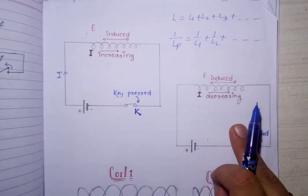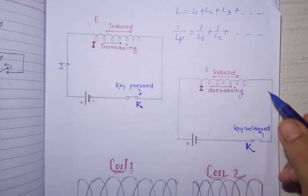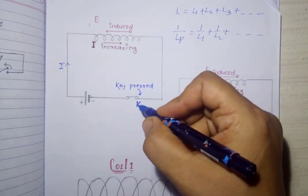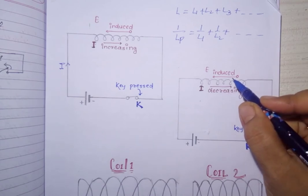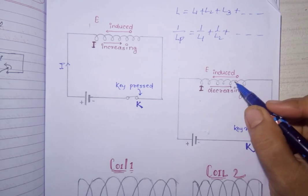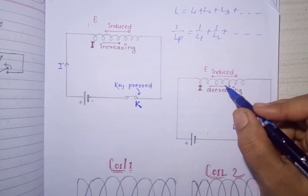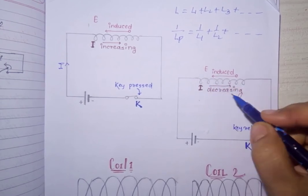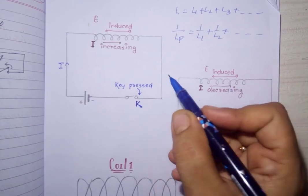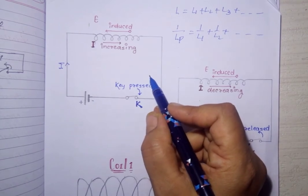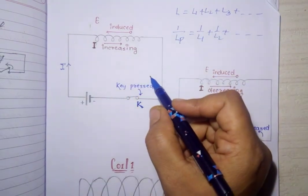In another diagram, when we release the key, current suddenly decreases. When there is a decreasing current, induced EMF is again produced in the coil because the change in current produces a change in magnetic flux, which produces a change in magnetic field. The induced EMF produced due to the change in magnetic flux caused by the change in current in the same coil - this is called self inductance.